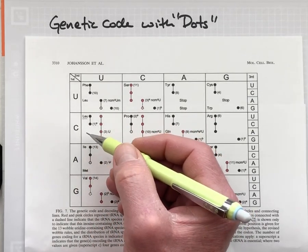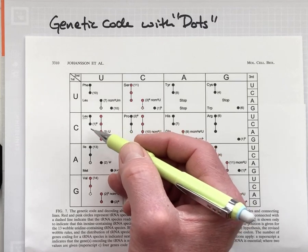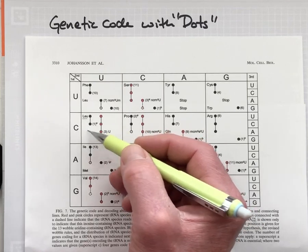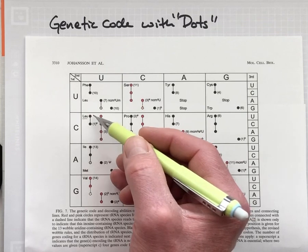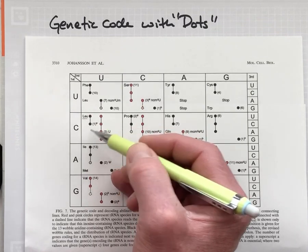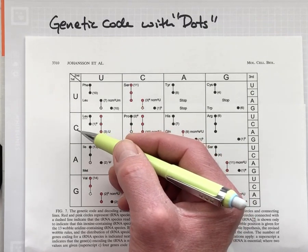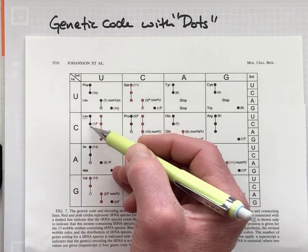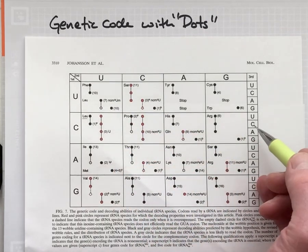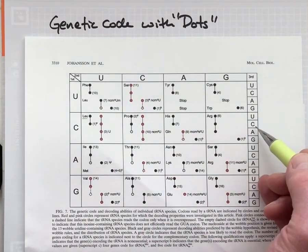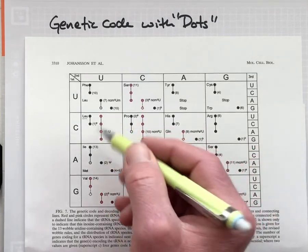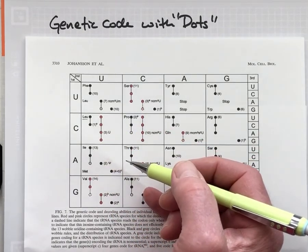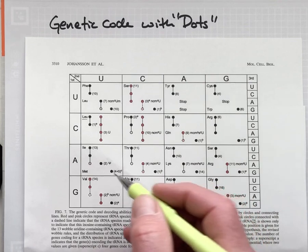And then there's a second tRNA that also brings leucine to the ribosome, also able to interpret codons beginning with CU, but is restricted to only interpret CUU and CUC. So two tRNAs execute the same function.